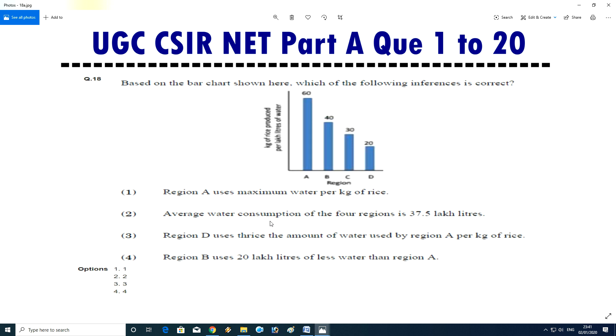Question number 18: based on the bar chart shown here, which of the following inferences is correct? Answer third is correct: region D uses thrice the amount of water used by region A per kg of rice.